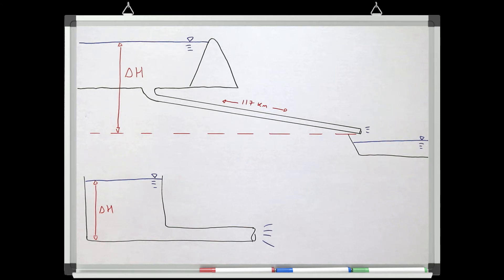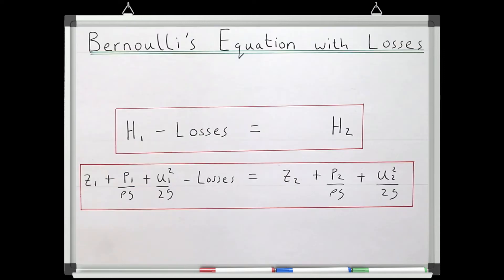We showed in the last video that we can use Bernoulli's equation accounting for losses to make accurate predictions of velocity in my system at home. So let's have a go at applying the same procedure for this much bigger system and see if it still gives accurate results.